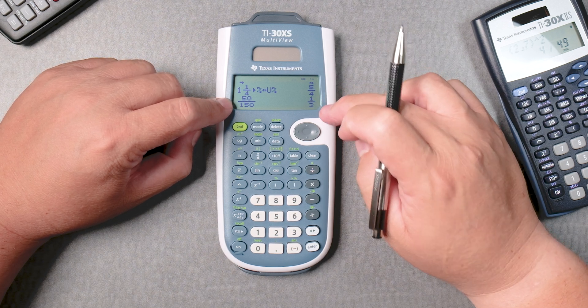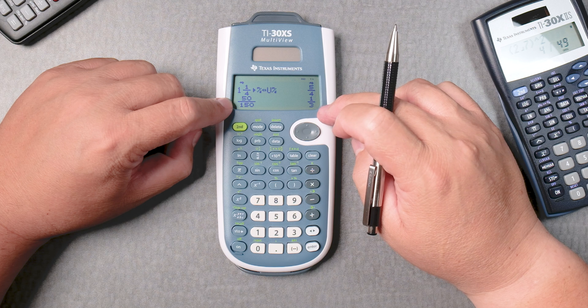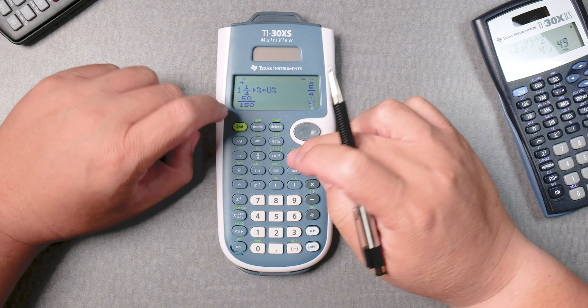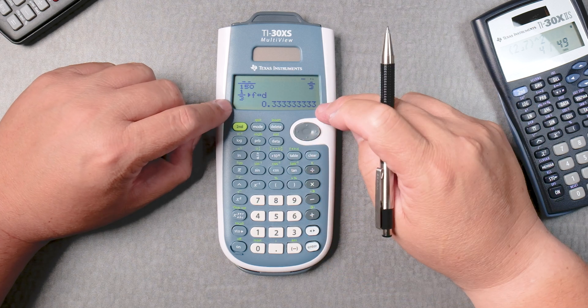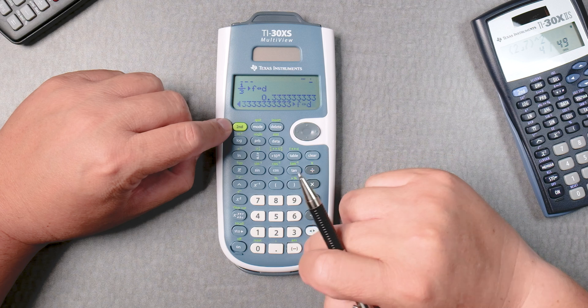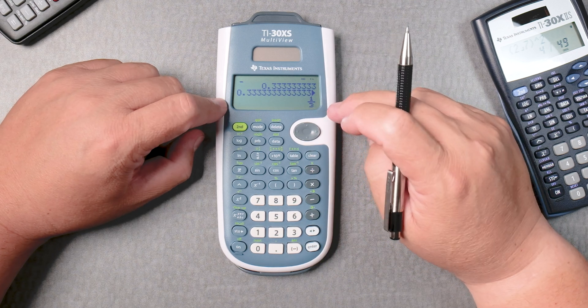Let's say I want this 1 3rd and I want it to be a decimal. Here you have fraction to decimal, so you press 2nd, table, enter, and it gives you a decimal.